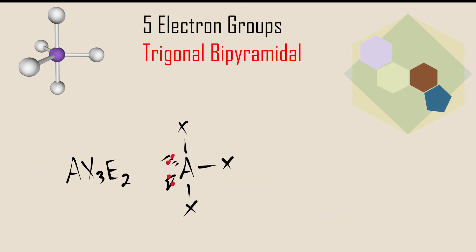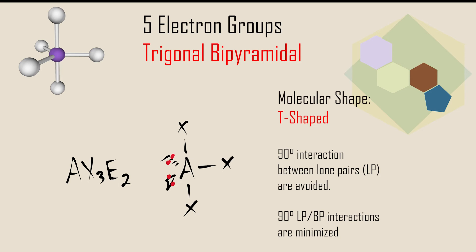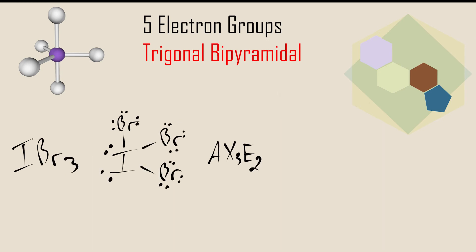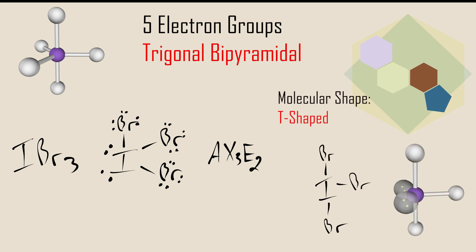Molecules with a central atom surrounded by three atoms and two lone pairs of electrons are designated AX3E2. The five electron groups orient themselves in a trigonal bipyramidal geometry, but the molecular geometry is T-shaped. Having the lone pairs on the equatorial plane minimizes both lone pair-lone pair interactions and lone pair-bonded pair interactions. Iodine tribromide is an AX3E2 molecule and therefore has a T-shaped molecular geometry. Without drawing the proper Lewis structure, one might assume an AX3 or trigonal planar geometry — this would ignore the lone pairs on the central atom and therefore be incorrect. We are always looking to minimize 90-degree lone pair-lone pair and 90-degree lone pair-bonded pair interactions, which is achieved in the T-shaped geometry.